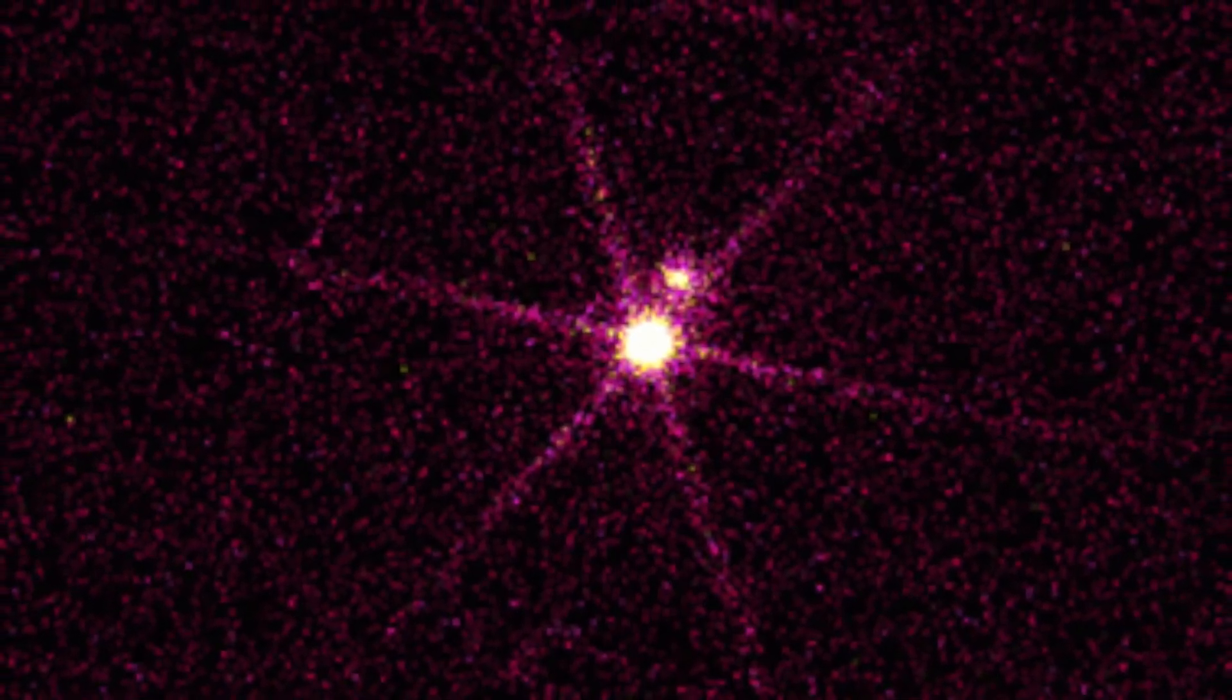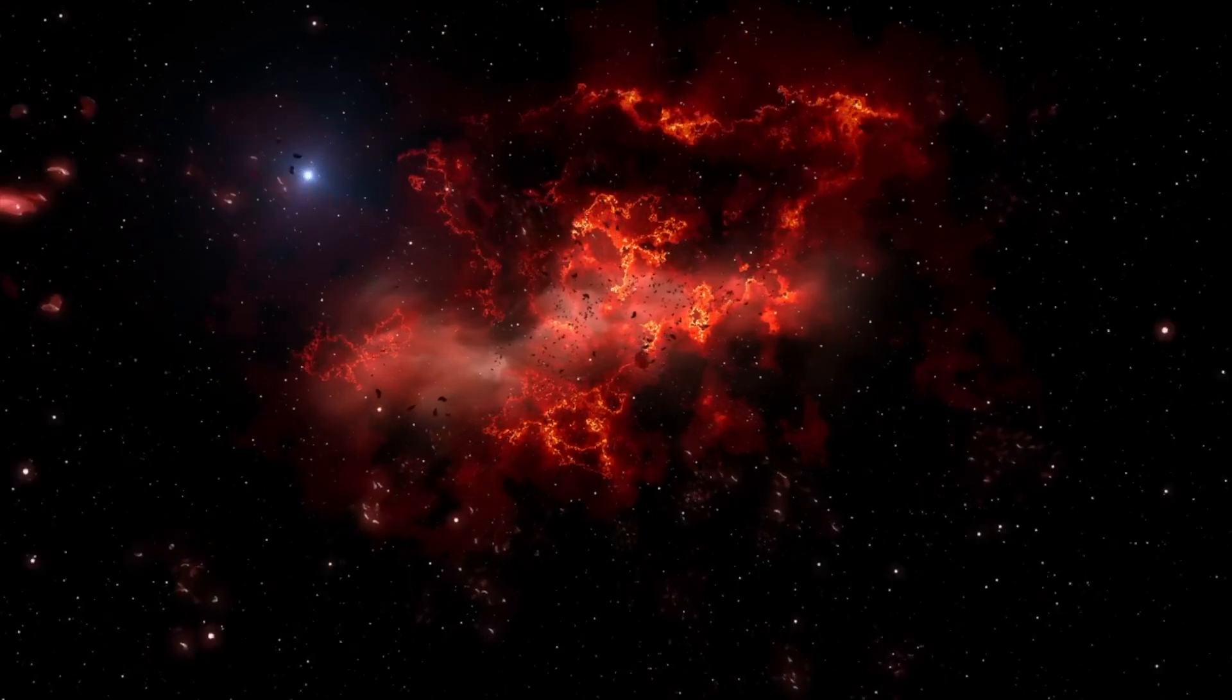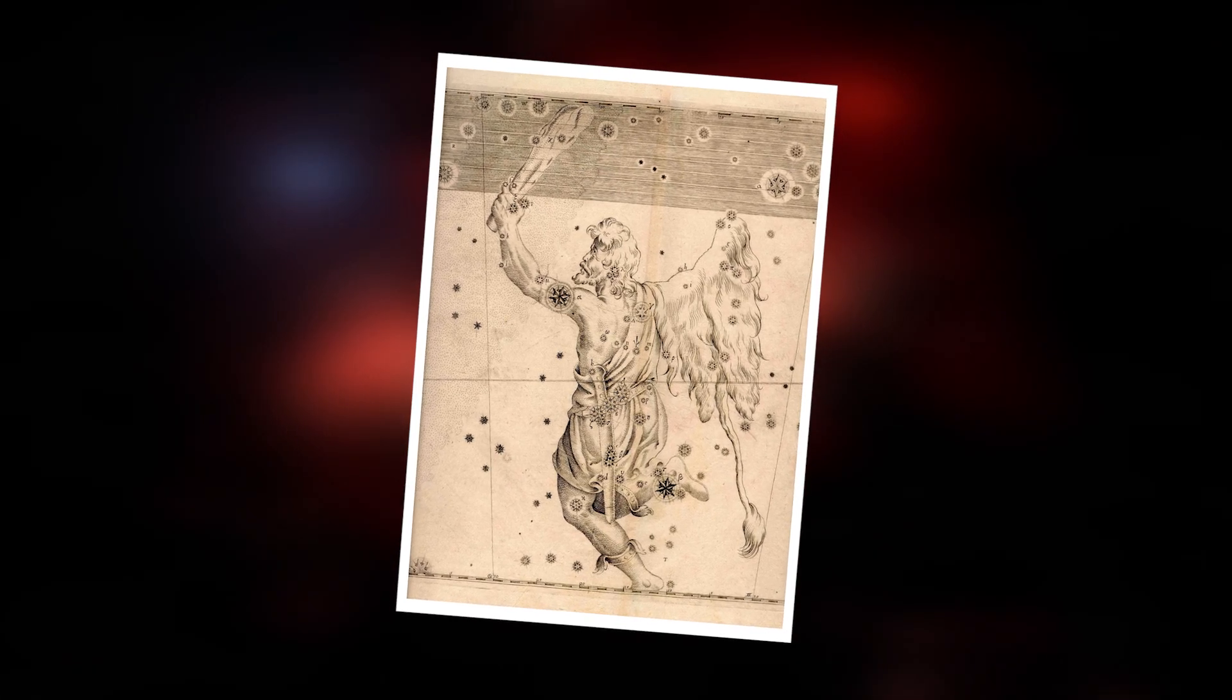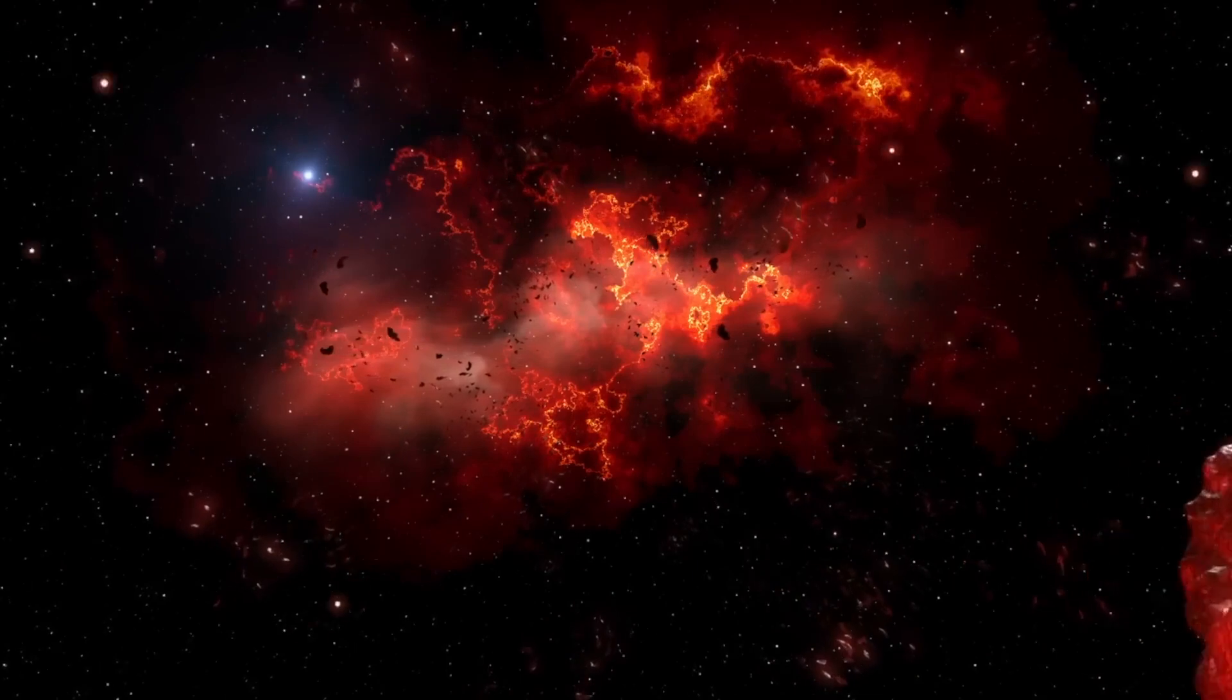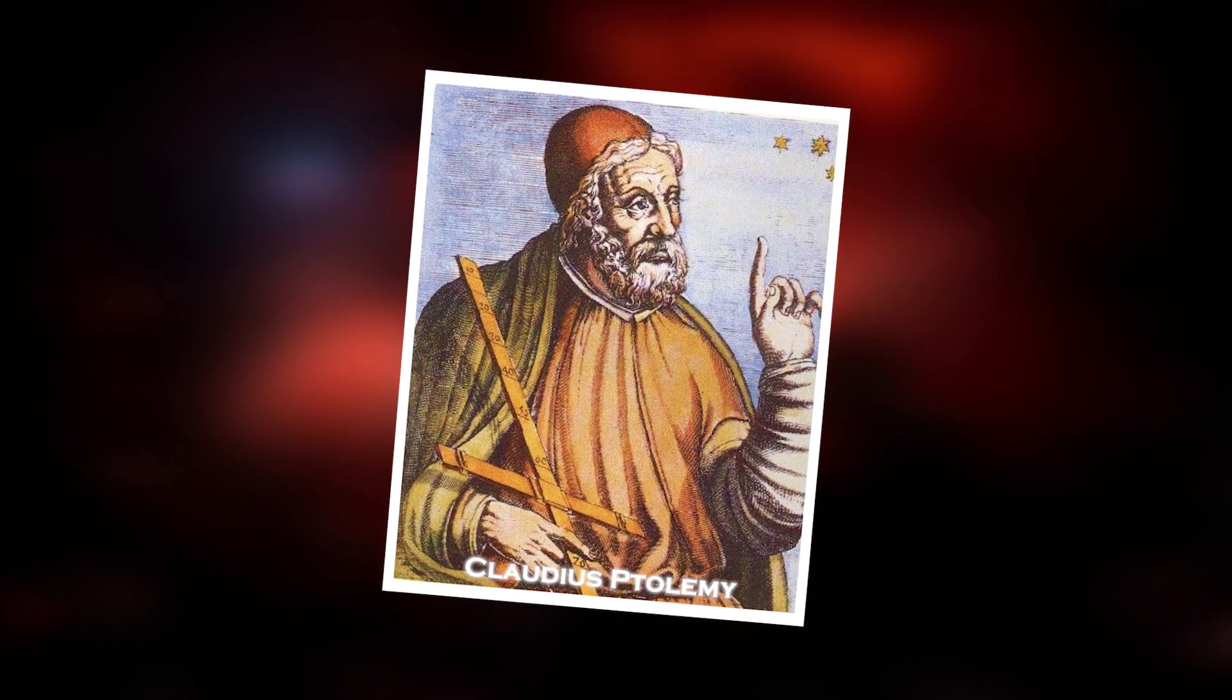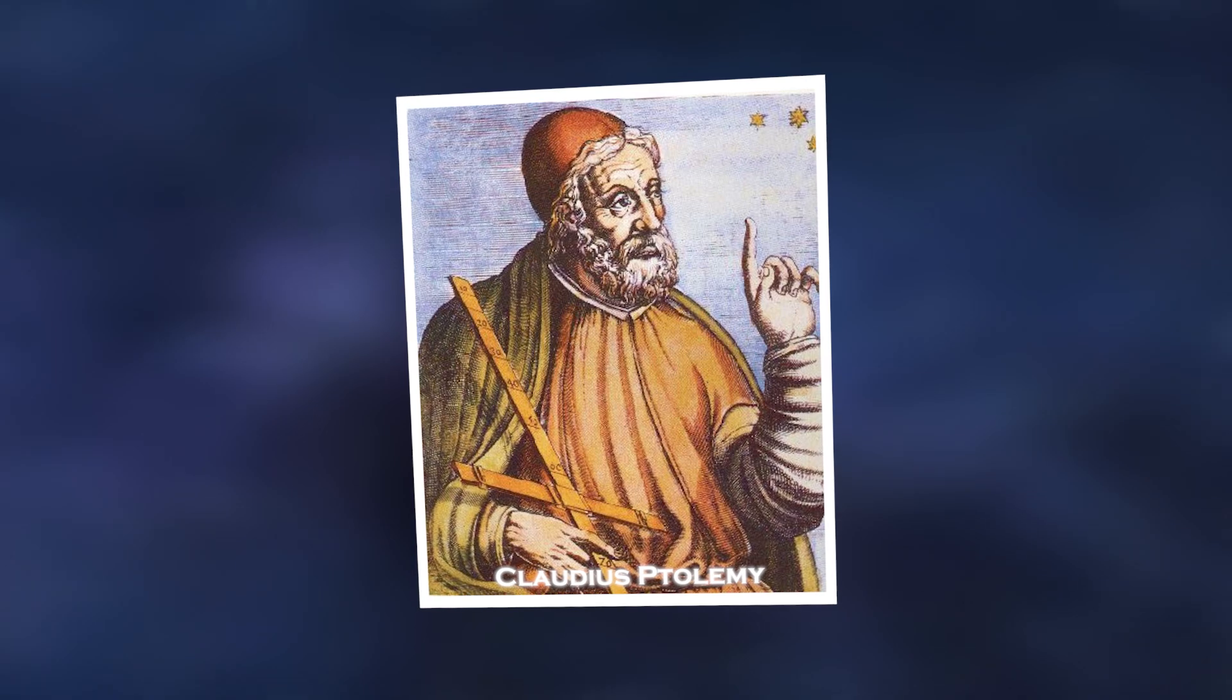Over the centuries, stars undergo a fascinating transformation from the vibrant blue hues of their youth to the fiery reds of their maturity. During the second century BC, Chinese stargazers made an intriguing observation, identifying Betelgeuse by the distinctive red color that set it apart in the celestial tapestry. Eventually, this observation passed to the keen eyes of the Greco-Roman astronomer Ptolemy in the second century AD, who, in his meticulous records, described Betelgeuse as having an orange or reddish appearance, a feature that to this day continues to catch our attention.